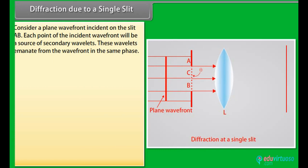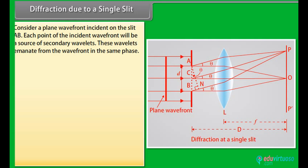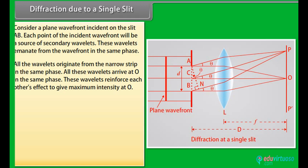Diffraction due to a single slit: Consider a plane wave front incident on the slit AB. Each point of the incident wave front will be a source of secondary wavelets, which emanate from the wave front in the same phase. The slit can be imagined to be divided into very narrow strips of equal width parallel to the slit. All the wavelets originate from the narrow strip in the same phase and arrive at O in the same phase, reinforcing each other to give maximum intensity at O.